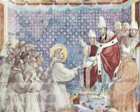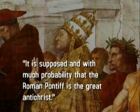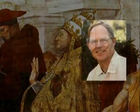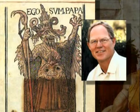Wycliffe was very bold against the Pope. He said it's blasphemy to call any man the head of the church, save Christ alone. He stated, 'It is supposed, and with much probability, that the Roman pontiff is the great Antichrist.' Hank Hanegraaff says it's foolish to call the Pope the Antichrist — but all of the old reformers and Baptists called him the Antichrist. It's Hank Hanegraaff that's wrong.